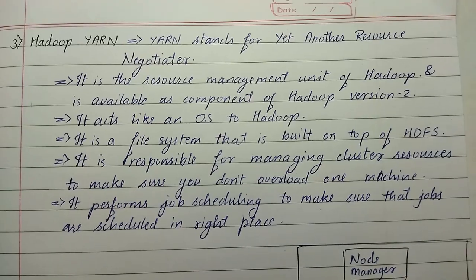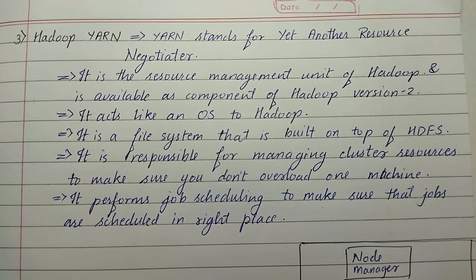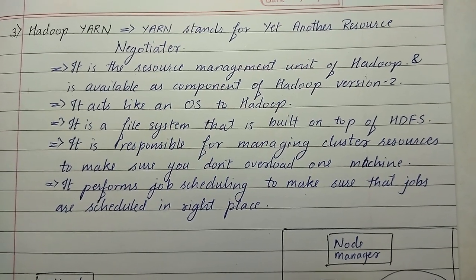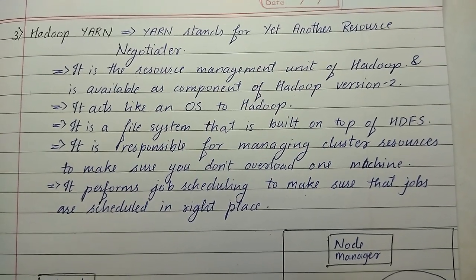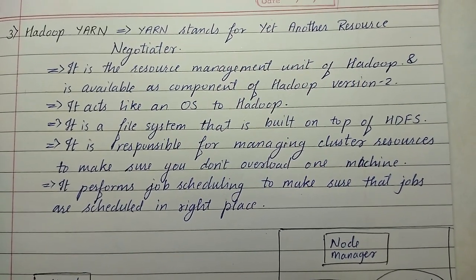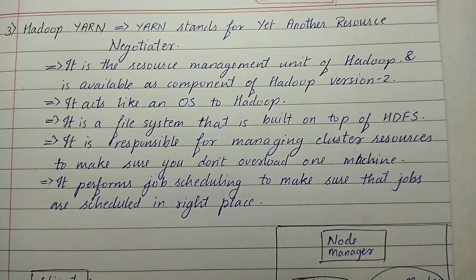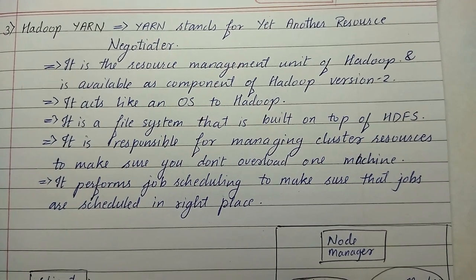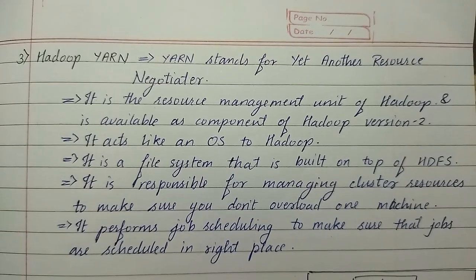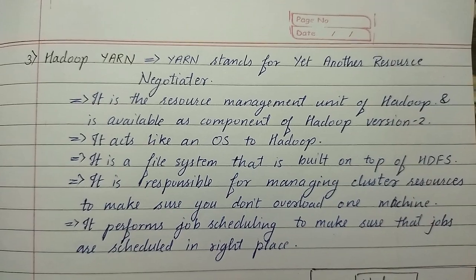The third component is Hadoop YARN. YARN stands for Yet Another Resource Negotiator. It is the resource management unit of Hadoop and is available as a component of Hadoop version 2. It acts like an OS to Hadoop. It is a file system built on top of HDFS. It is responsible for managing cluster resources to make sure you don't overload one machine, and it performs job scheduling to make sure that jobs are scheduled in the right place.